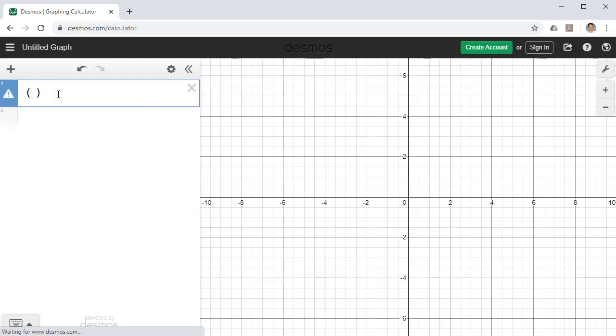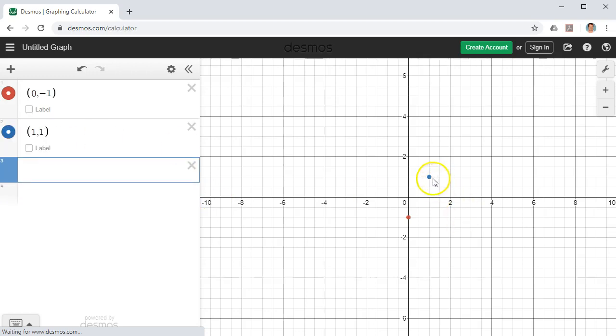So the first one was 0 negative 1. You just put it in brackets and click enter and you'll see that Desmos will label the point for you. The next one is bracket 1 comma 1 close bracket enter. Here's our second point. And the third point is 2 negative 1 and we have our three points on our Cartesian plane.